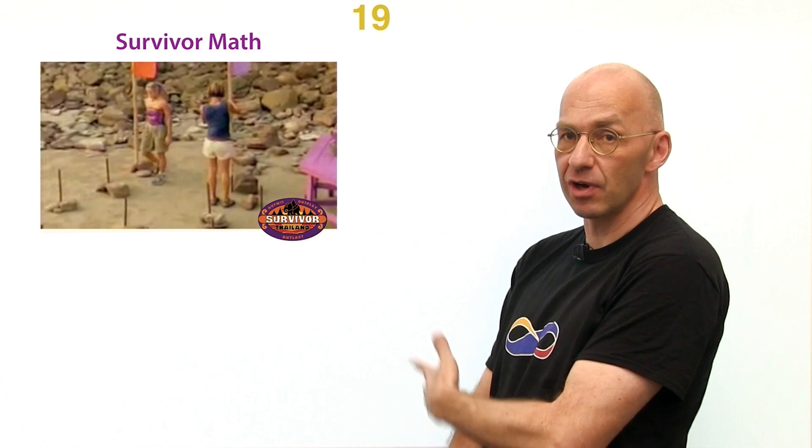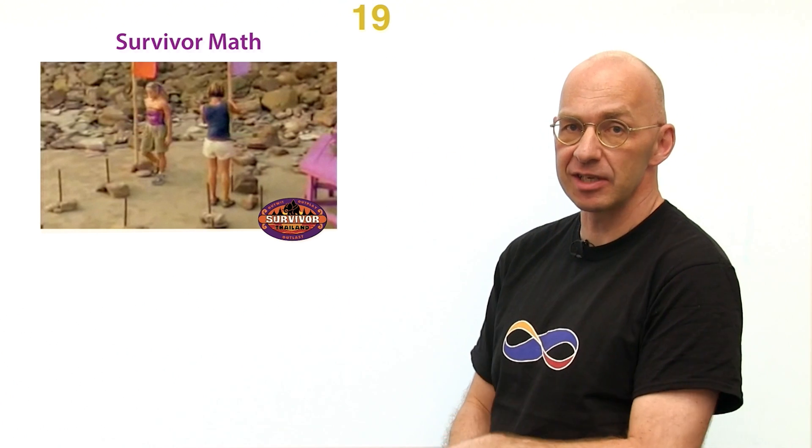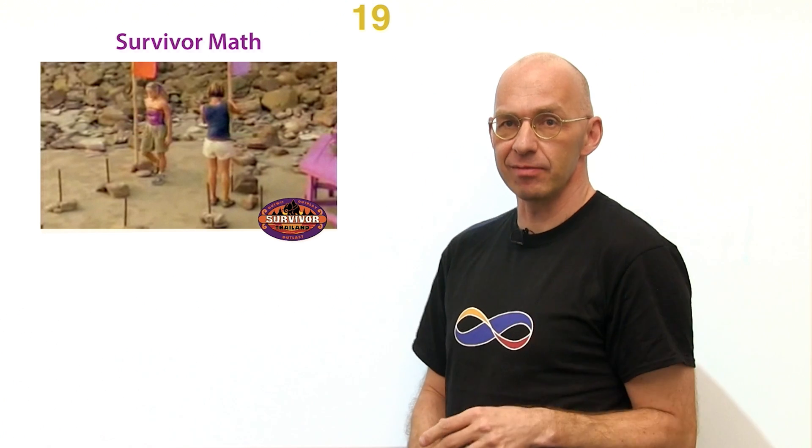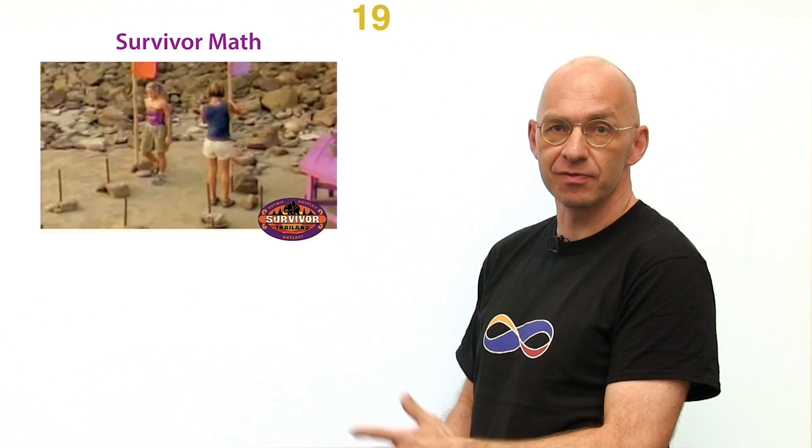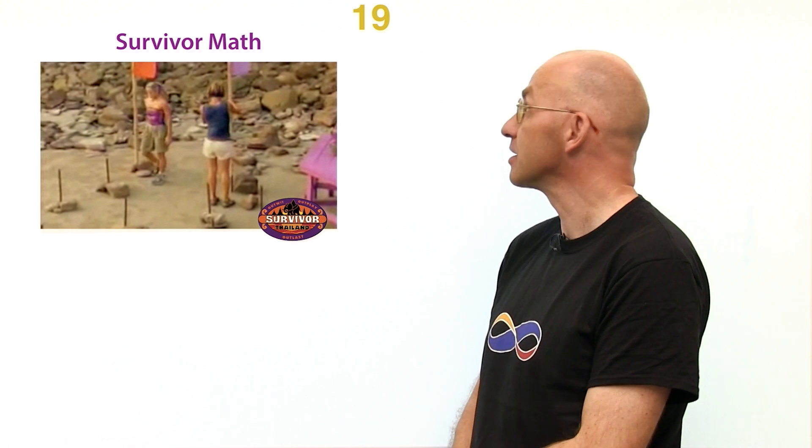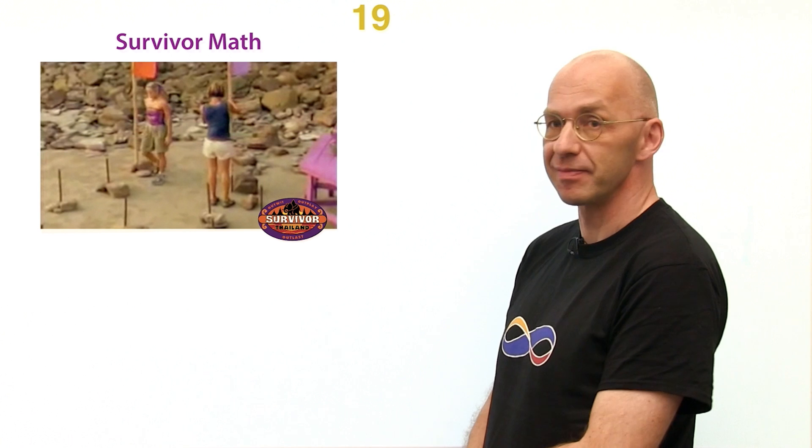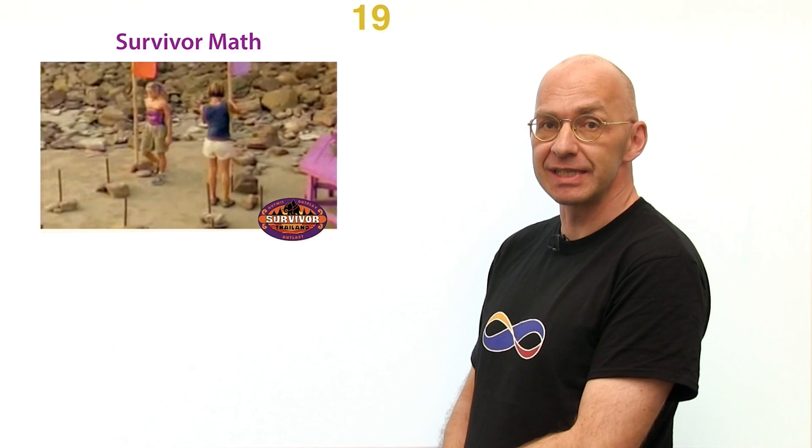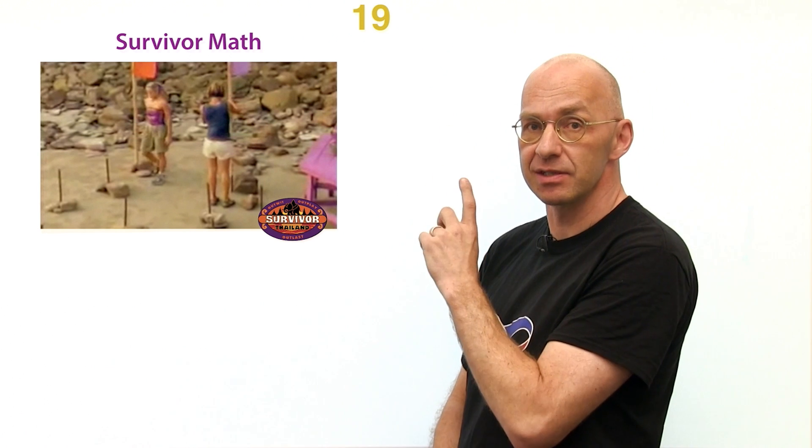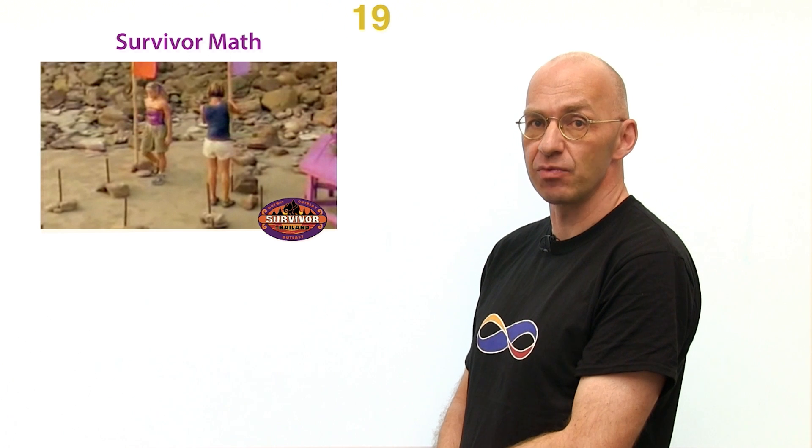Sookjai takes two flags on their first move, leaving 19. Okay, so we've got 19 left over, and obviously they didn't figure out what the strategy is. I mean, we shouldn't be too hard on them. Maybe they just had like a minute or so to figure out what's going on, or maybe they didn't invite any mathematicians or whatever.